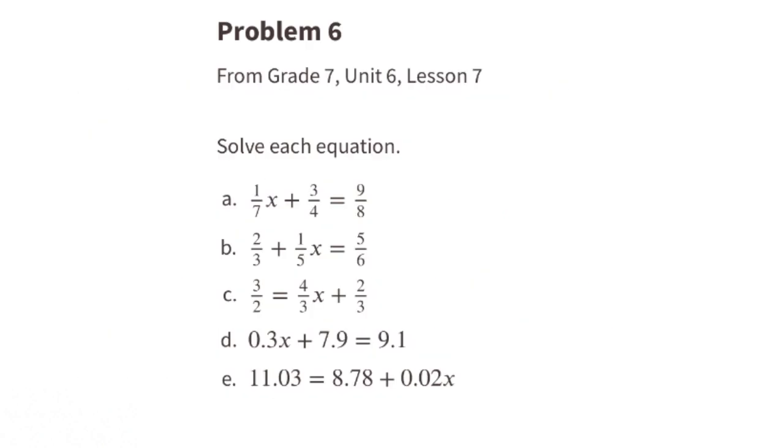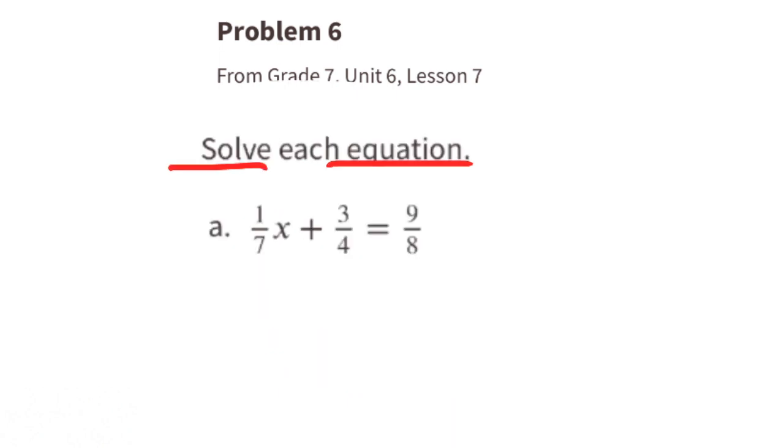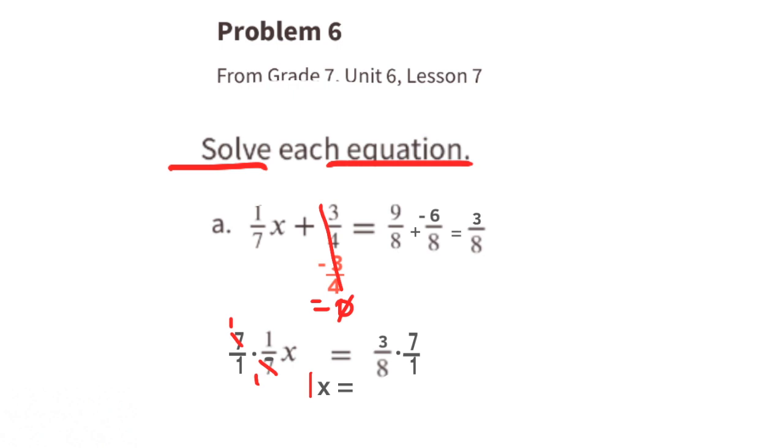Problem number 6. From 7th grade, Unit 6, Lesson 7. Solve each equation. A. Subtract 3 fourths from both sides of the equal sign. 3 fourths minus 3 fourths equals 0. 9 eighths minus 3 fourths equals 3 eighths. Now you can rewrite it as 1 seventh X equals 3 eighths. Multiply both sides by the reciprocal of 1 seventh, which is 7 over 1. That makes 1 X or X, and 3 eighths times 7 over 1 is 21 eighths. So X equals 21 eighths.